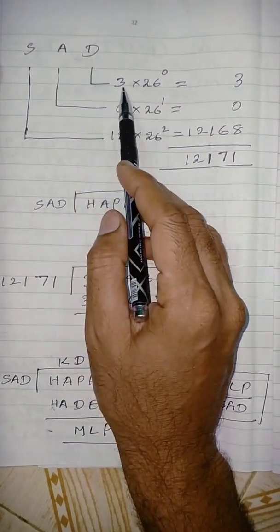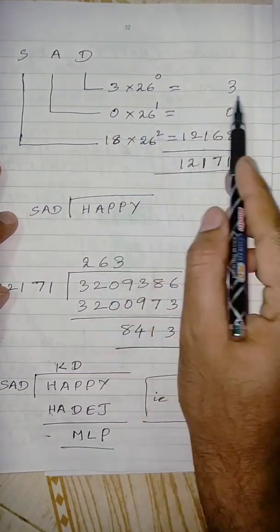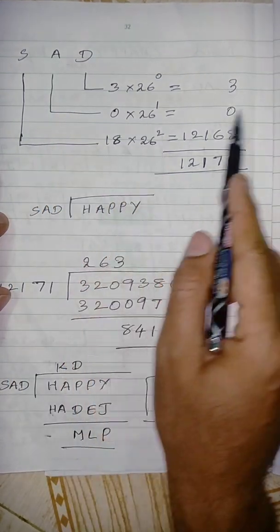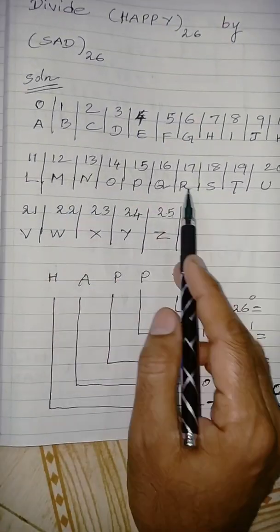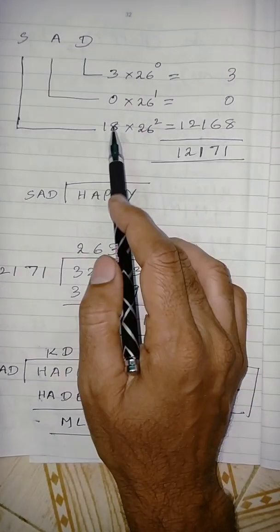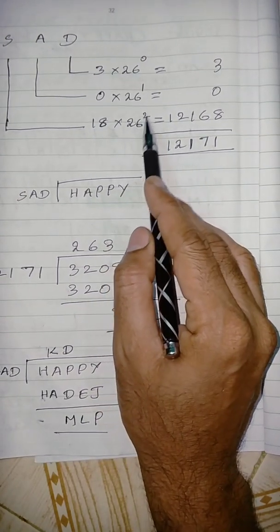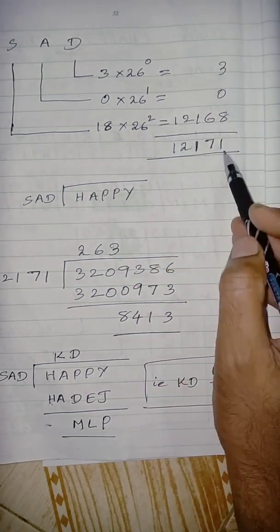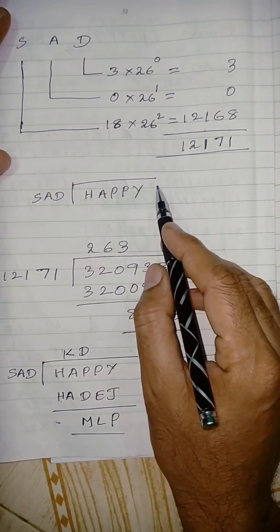D corresponding value is 3 — just now we have seen D represents 3. So 3 into 26 power 0, we write 3 only. Next, A we know is 0, so 0 into 26 power 1 gives 0. What is S? S is 18, so 18 into 26 power 2 — 26 squared multiplied by 18 gives 12,168. So the total is 12,171.